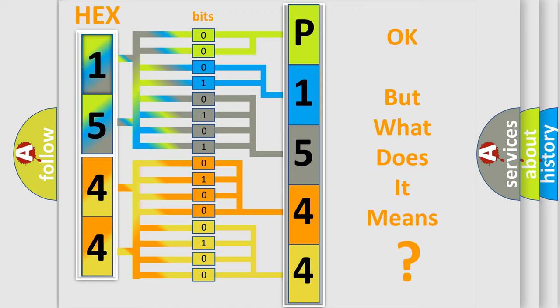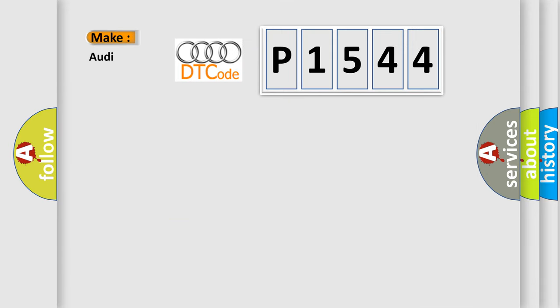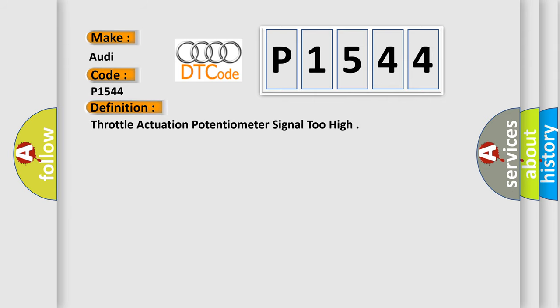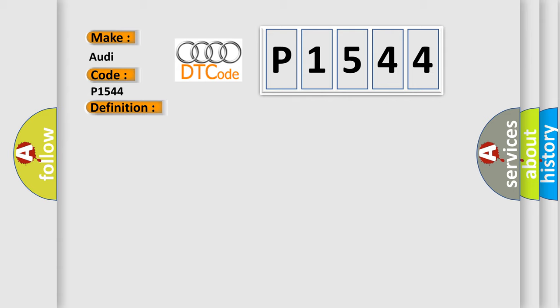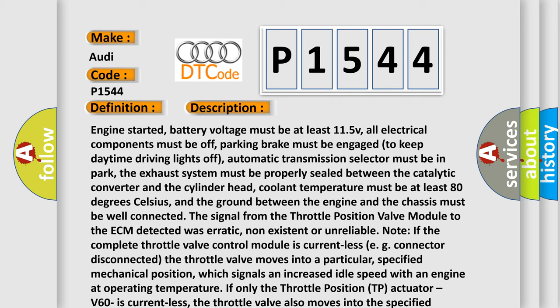The number itself does not make sense to us if we cannot assign information about what it actually expresses. So what does the diagnostic trouble code P1544 interpret specifically for our car manufacturers? The basic definition is: throttle actuation potentiometer signal too high. And now here is a short description of this DTC code.